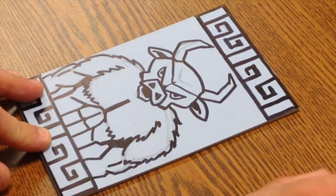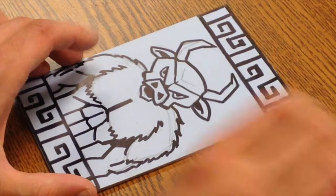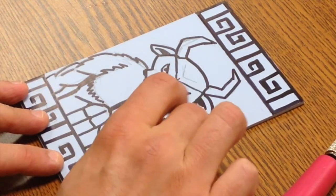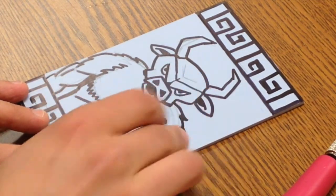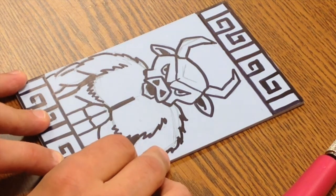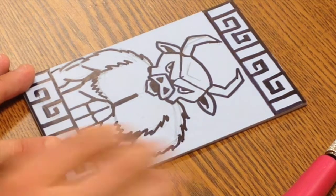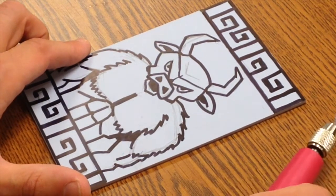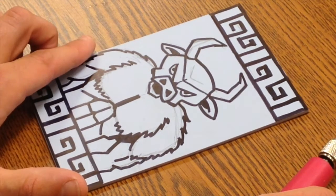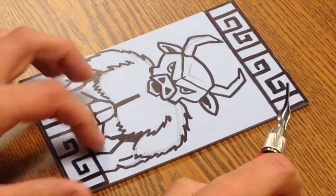So with this kind of print, this is an easy cut linoleum print. So it's much softer than regular linoleum, but you still have to be careful with it. I like it because it does grip against the surface. And so you don't necessarily have to have a bench hook, but you do want to be careful and move slowly.